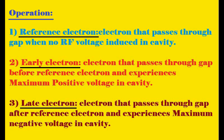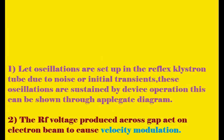The reference electron is considered when no specific voltage conditions are applied. The early electron is the one which passes the cavity gap before the reference electron. The late electron is the one which passes the cavity gap after the reference electron.